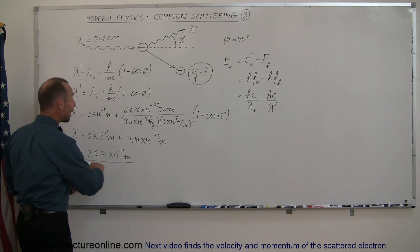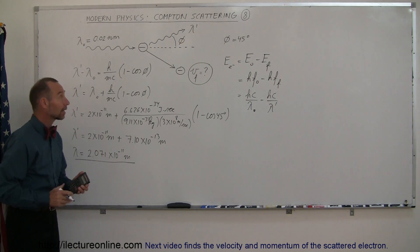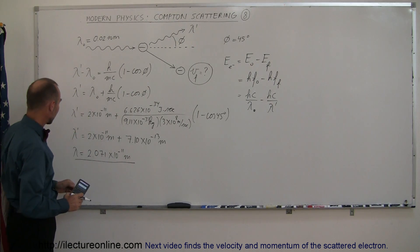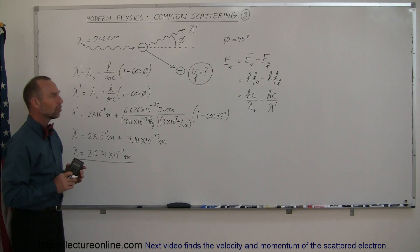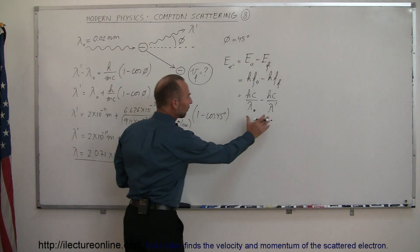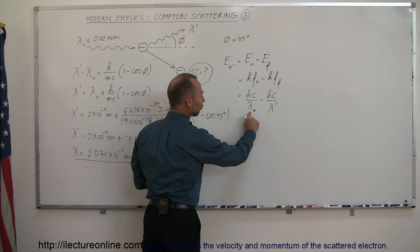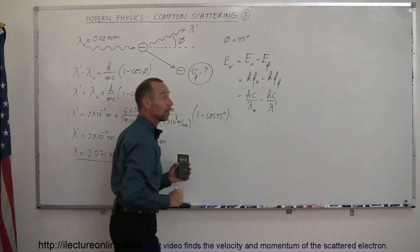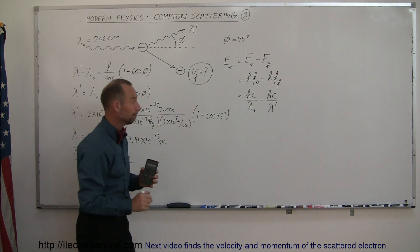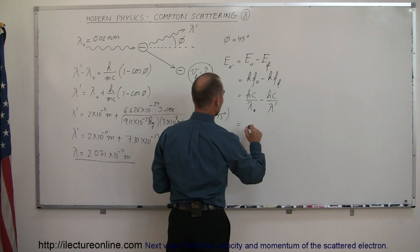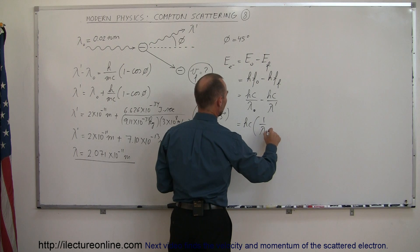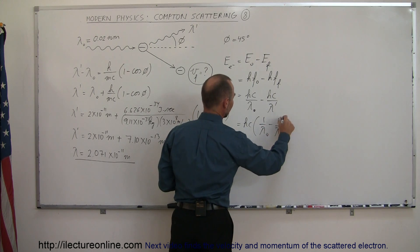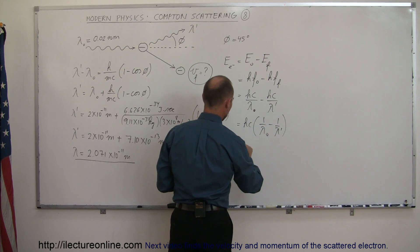That's the new wavelength of the photon after it scatters off the electron; here's the old wavelength, meaning it's lost some energy. We can calculate the difference in energy now that we know both the initial and final wavelengths using that equation. That equals hc times 1 over lambda initial minus 1 over lambda final.